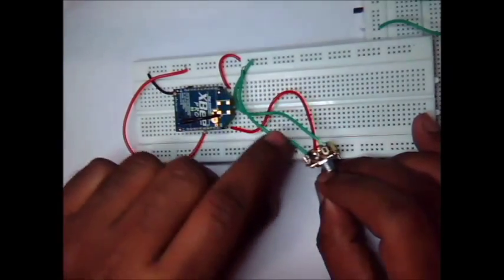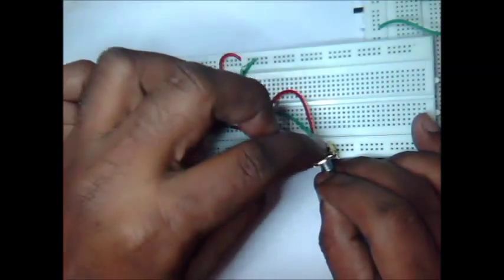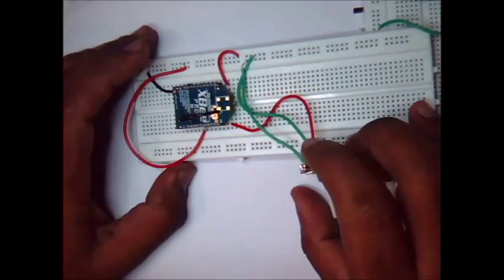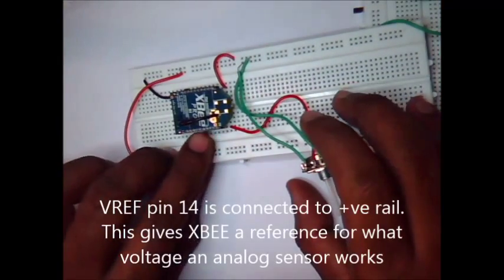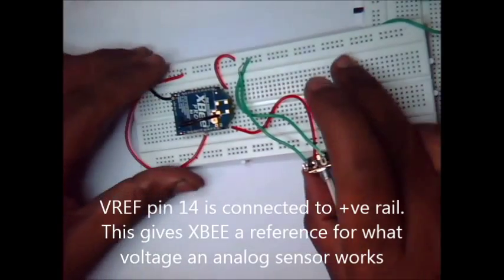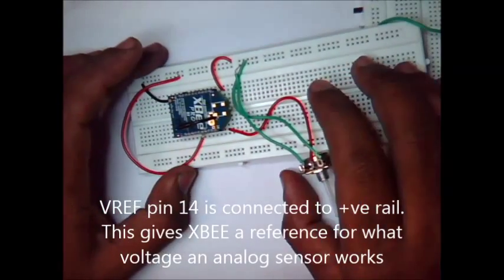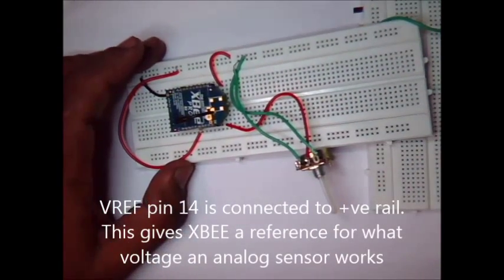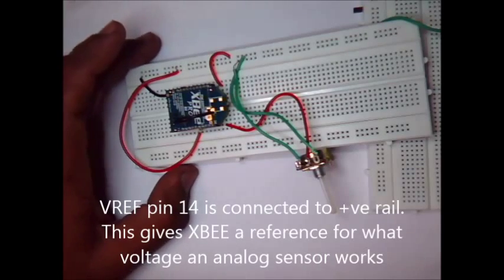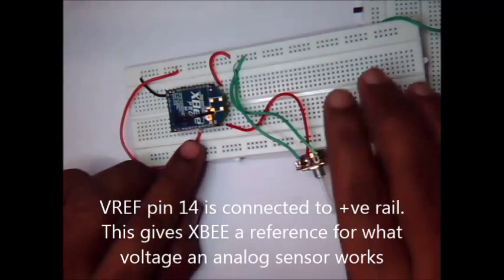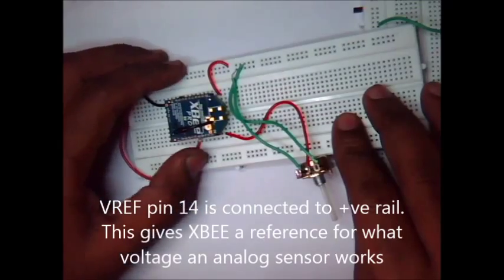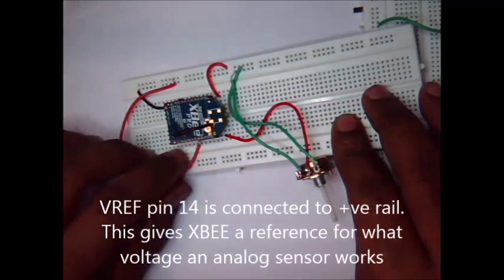One end of potentiometer is connected to positive rail and the other end to the ground. And V reference, that is pin 14, is connected to the positive rail. This gives XB a reference for what voltage the analog sensor is working. This connection is very important for analog inputs.